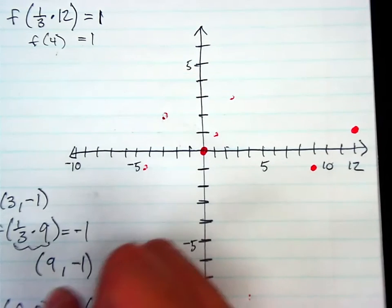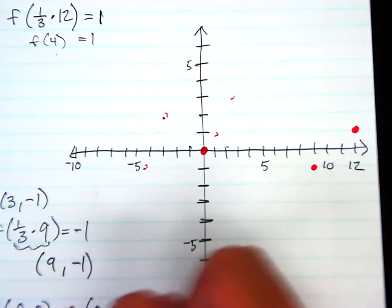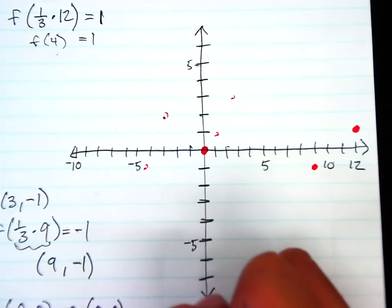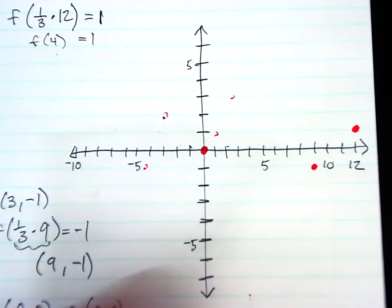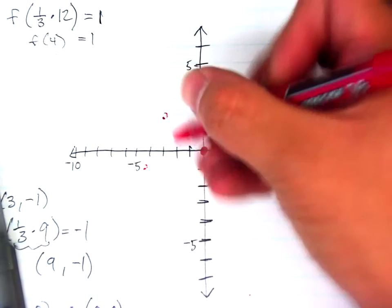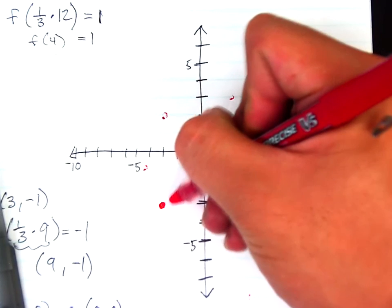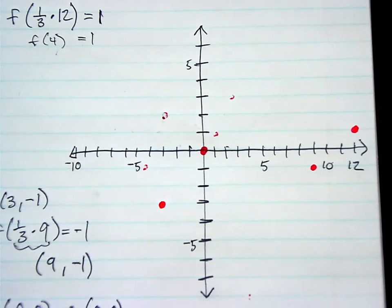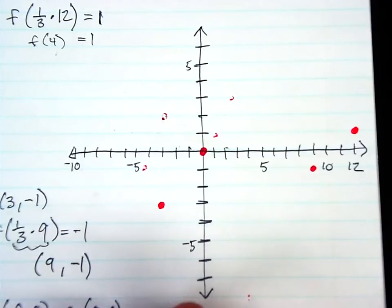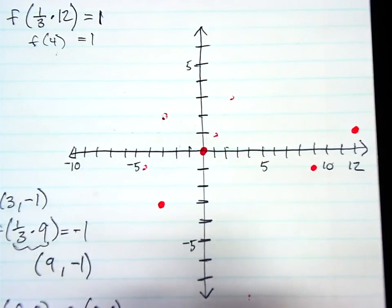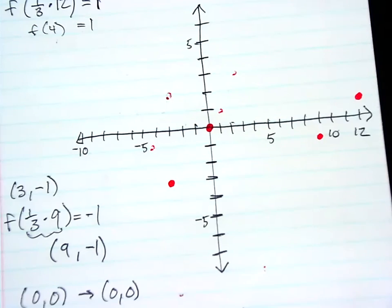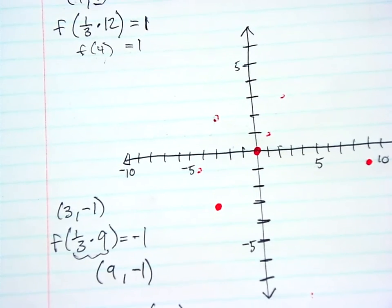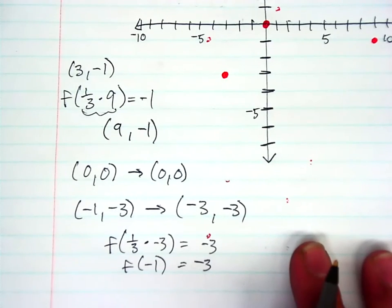And (-1, -3) will now become (-3, -3). So 1, 2, 3, 1, 2, 3. Again, this one is because I need to figure out what I take one-thirds of in order to get that -1 that I started with. So in this case, it would have to be -3. Oops, let's go ahead and push that up for you guys, sorry about that. So that's how I got that final point.